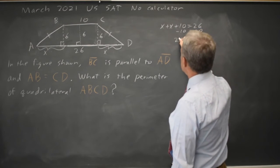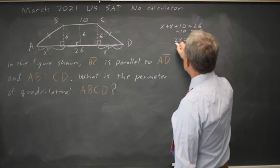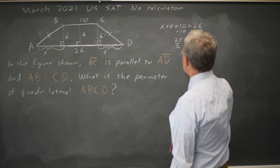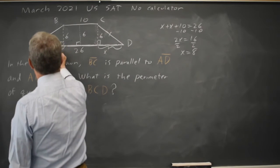Subtracting 10 from both sides, 2X equals 16. Divide both sides by 2, and I get X equals 8. This side is 8.